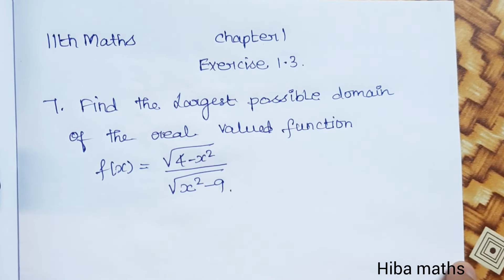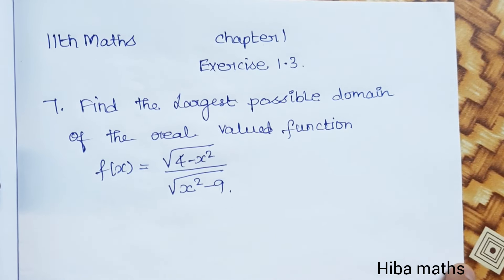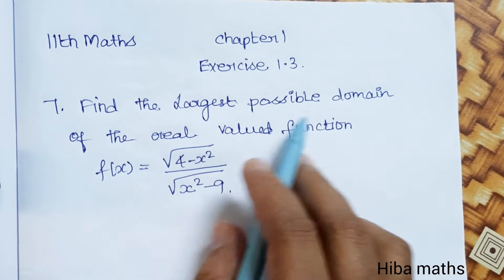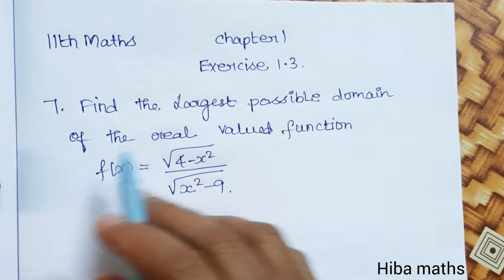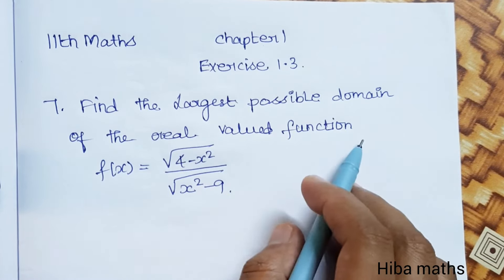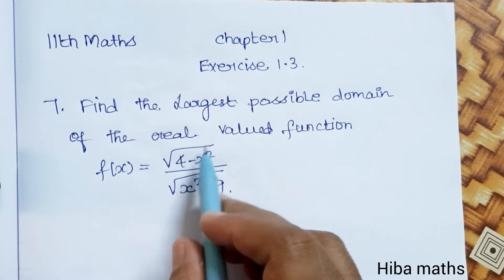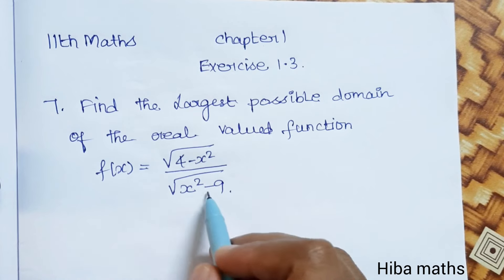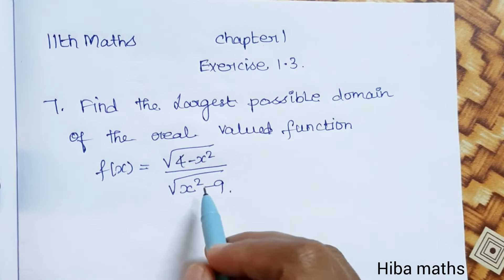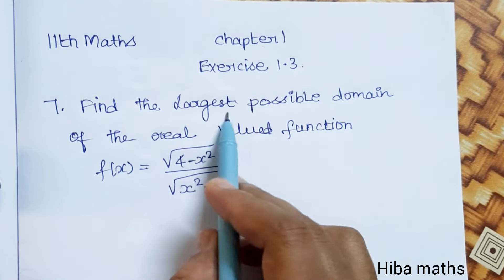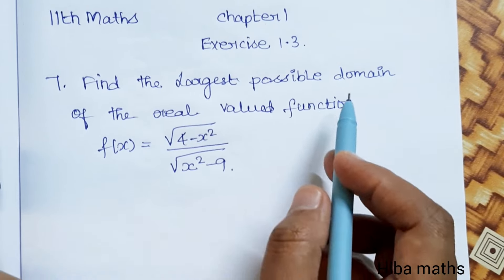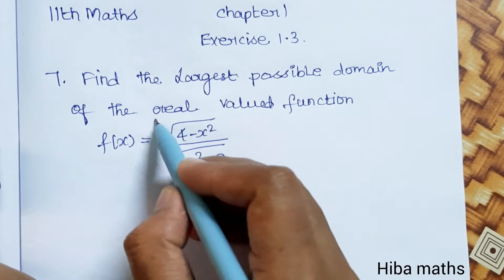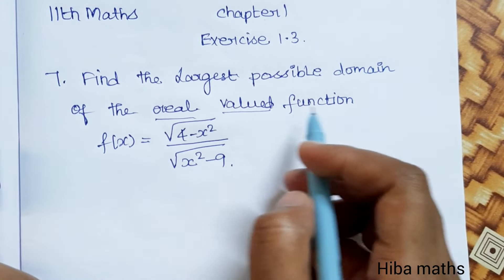Hello students, welcome to Hebrew Max 11th Standard, Chapter 1, Exercise 1.3, 7th question. Find the largest possible domain of the real valued function f(x) = √(4 - x²) divided by √(x² - 9). Find the largest possible domain of real values.